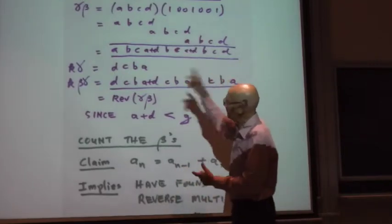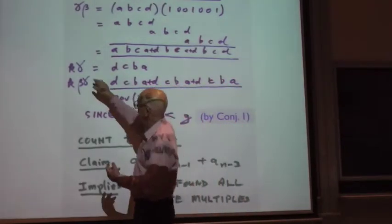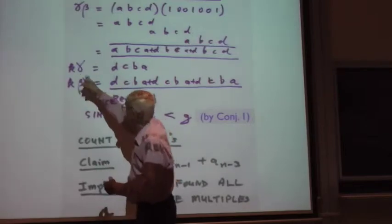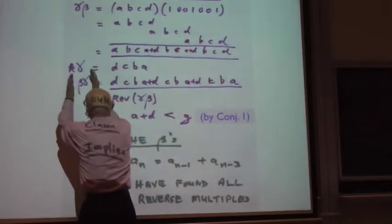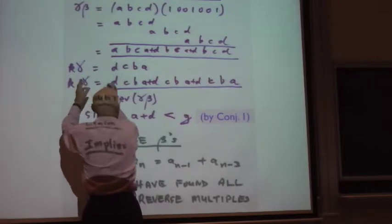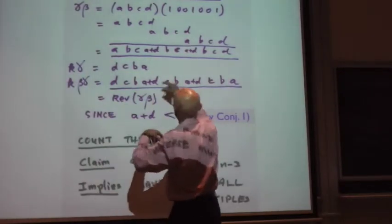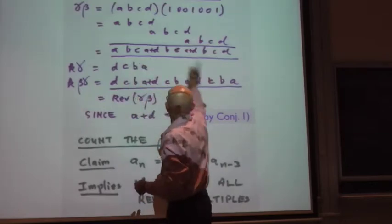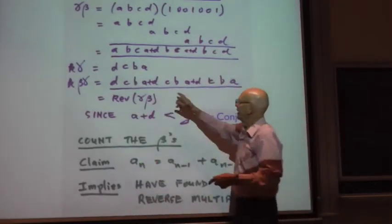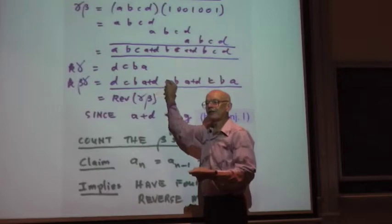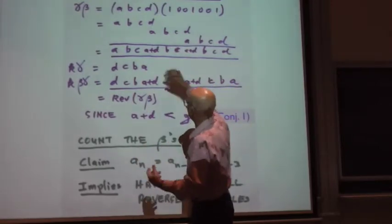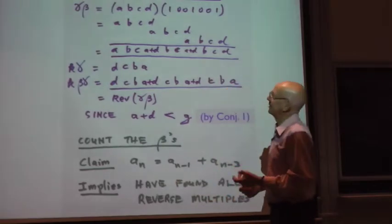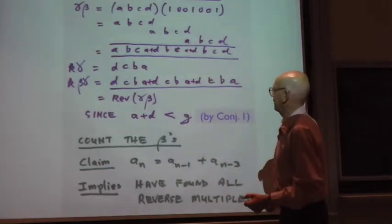Now, we know that gamma is itself a reverse multiple. So when we multiply by K, it just reverses. If now we take K times beta times gamma, we do the same calculation, and we get the same number in the reverse order. Provided A plus D didn't overflow, we're all free. We know that the reverse is equal to the reverse, as it should be.